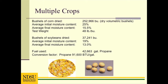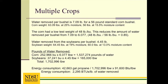Frequently, a dryer is used to dry more than one type of grain. The process of determining the energy efficiency is the same, but the amount of water removed must be calculated for each type of grain and combined to determine the total pounds of water removed. In this example, the dryer was used primarily for corn, but some soybeans were also dried. Note that the corn had a very low test weight, so the amount of water removed will need to be adjusted. The amount of water removed per bushel of 56-pound corn is calculated to be 7.09 pounds per bushel.